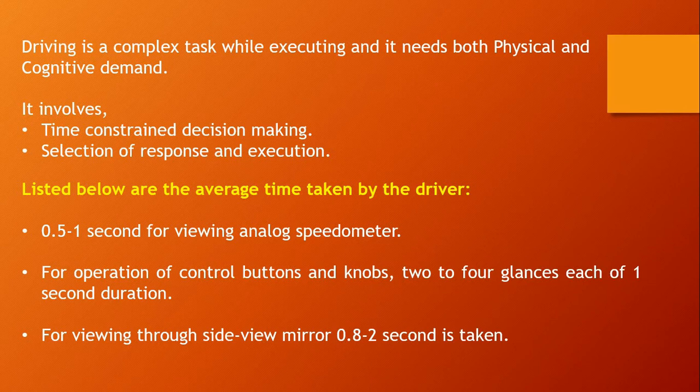For example, if a driver moving at a speed of 100 kilometers per hour takes a glance off the road for approximately 0.82 seconds, he would have crossed nearly 30 to 40 meters.